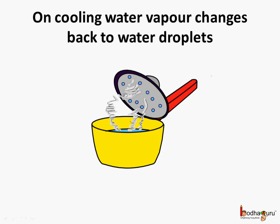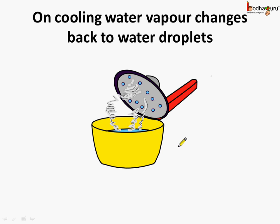Now, what happens if we cover the boiling water with a lid? We will see tiny droplets of water on the inner side of the lid. When the water vapor touches the cool lid, it changes back to water.